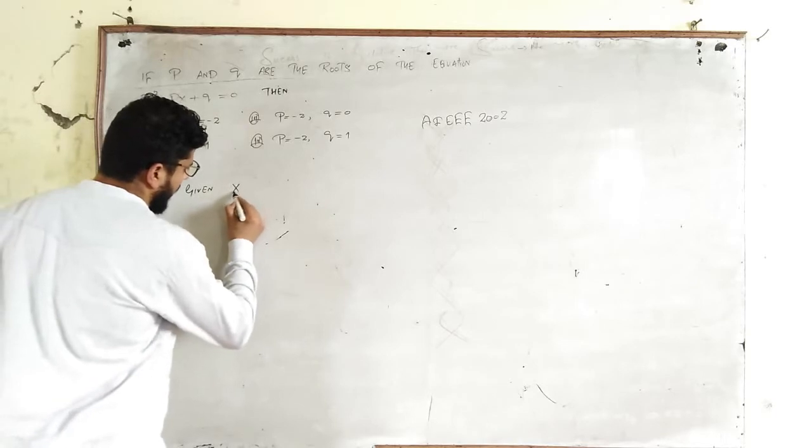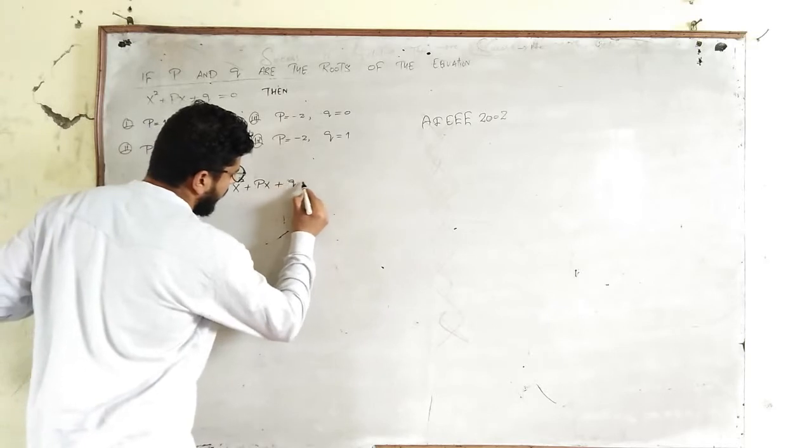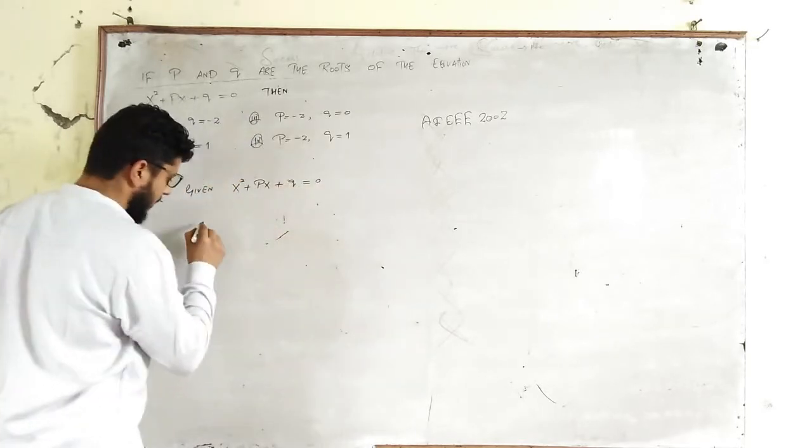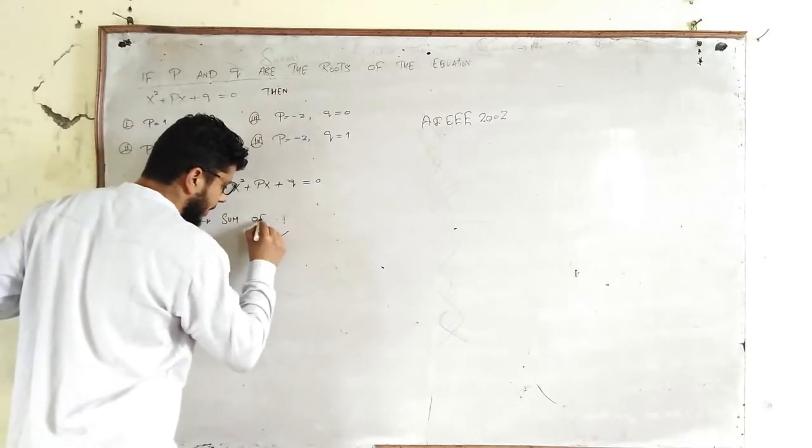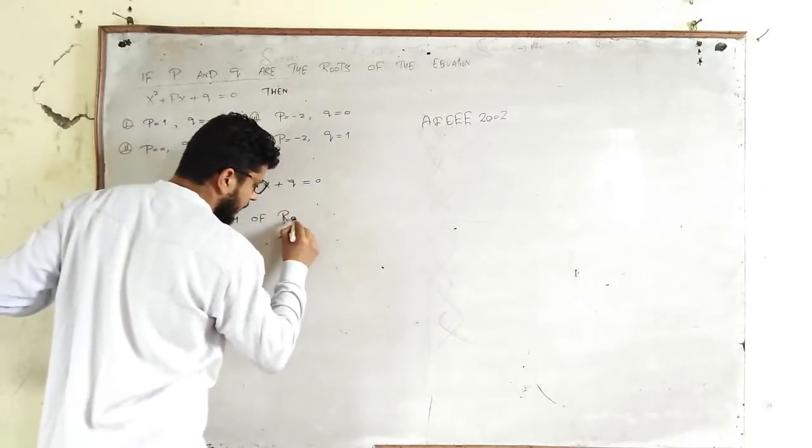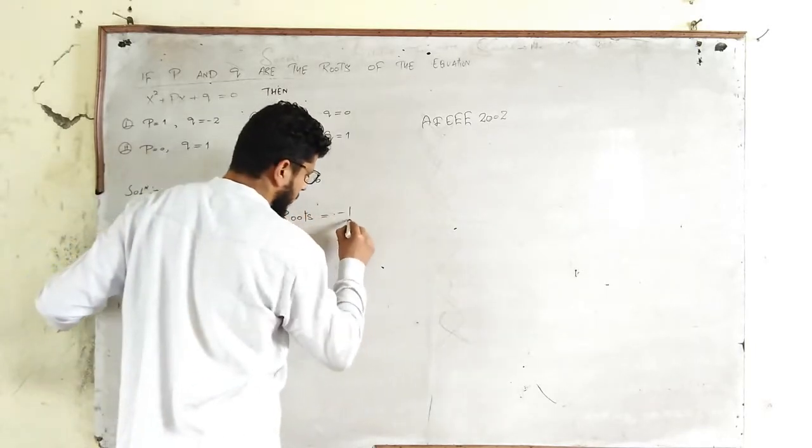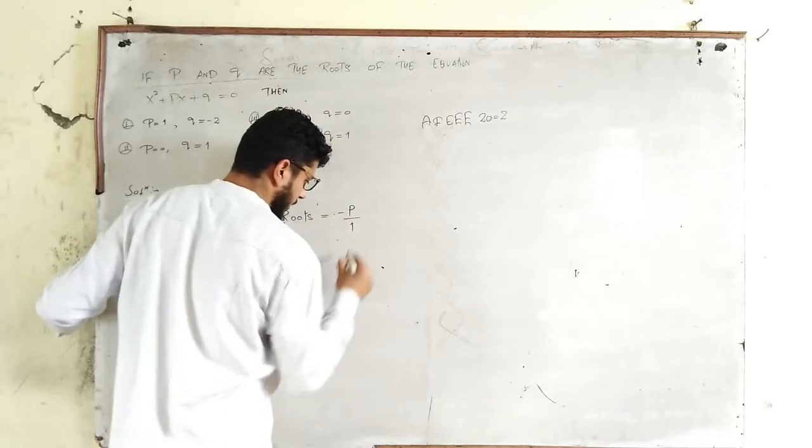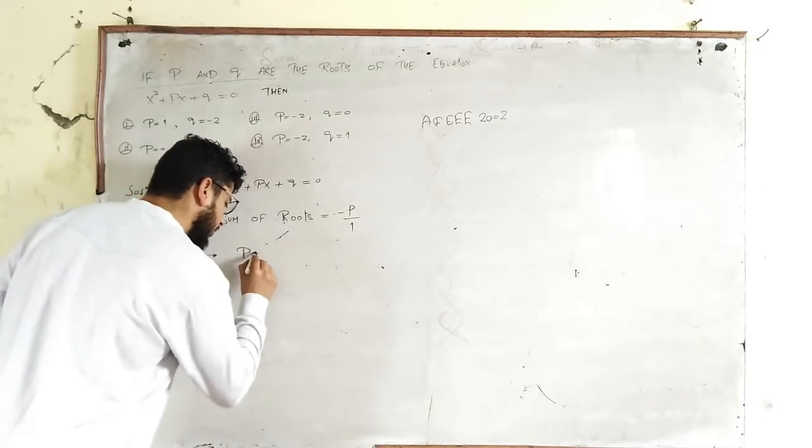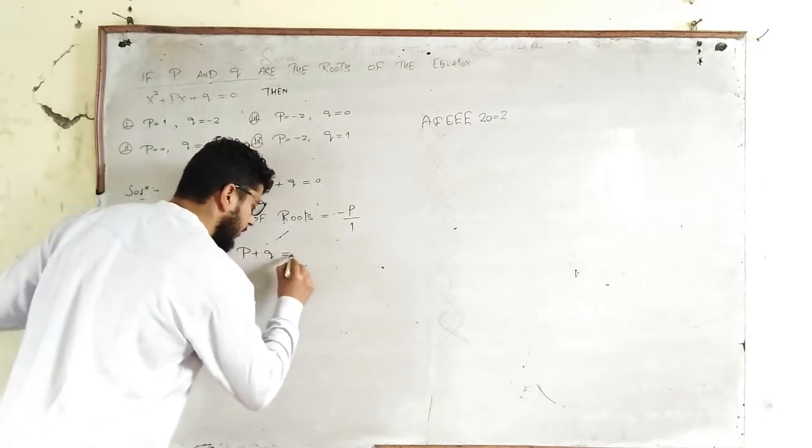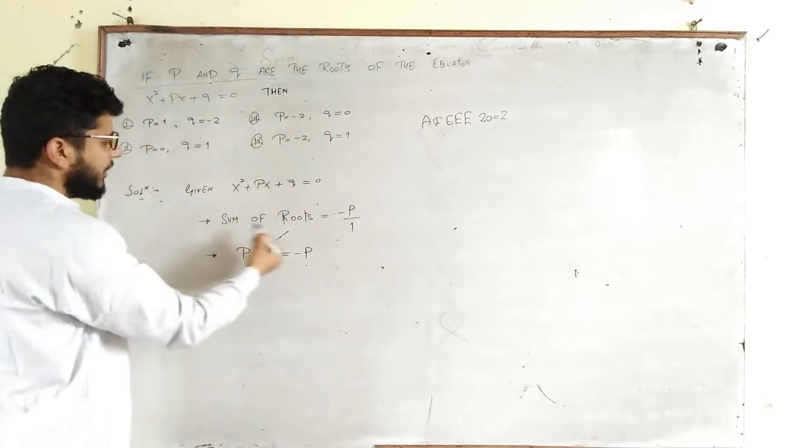Given x² + Px + Q = 0, the sum of roots equals negative times the coefficient of x upon the coefficient of x², that is 1. Which implies P + Q = -P. Why? Because the roots are given to be P and Q.